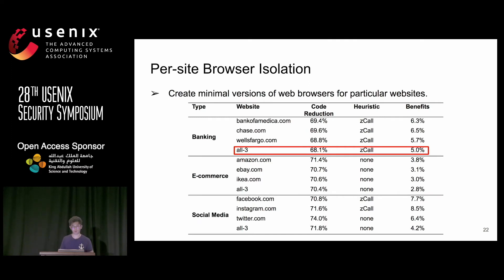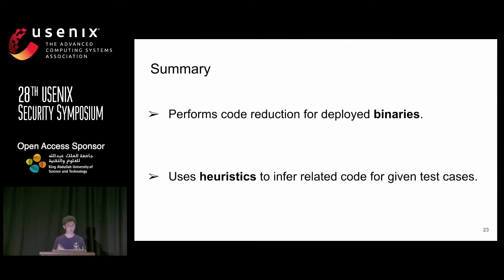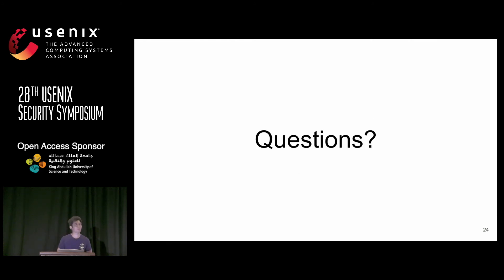In summary, we propose RAZOR, which performs code reduction for deployed binaries without any source code. Instead of assuming test cases are complete for a particular functionality, we use heuristics to infer more related code, which has proved to be very effective. Thank you for your attention, and I'm happy to take questions now.